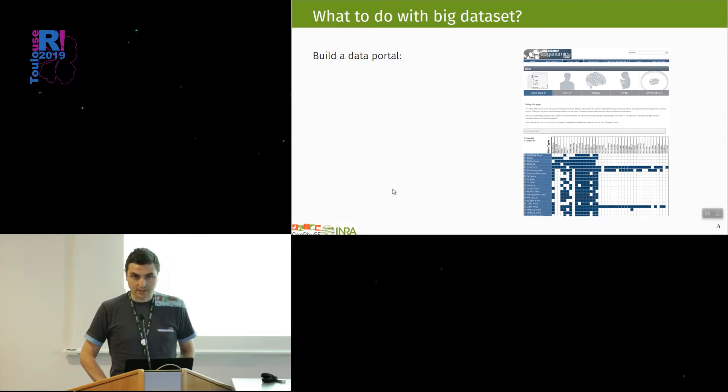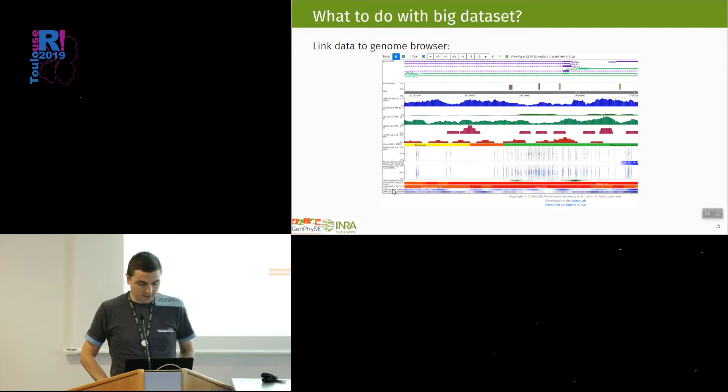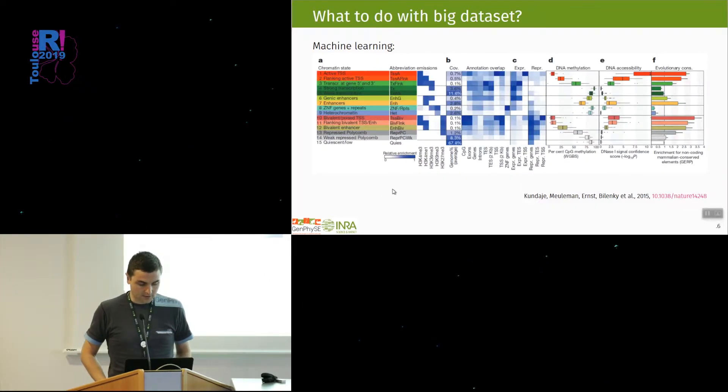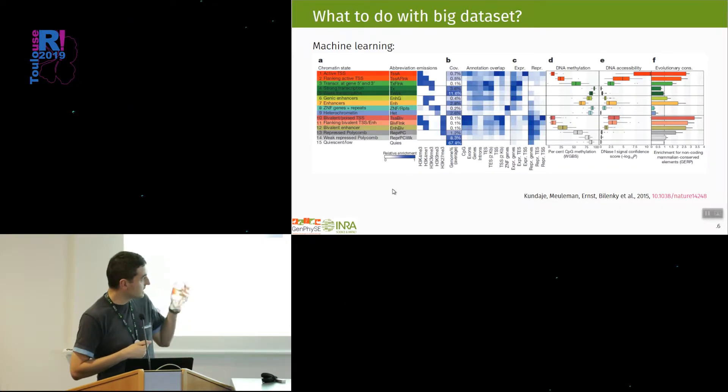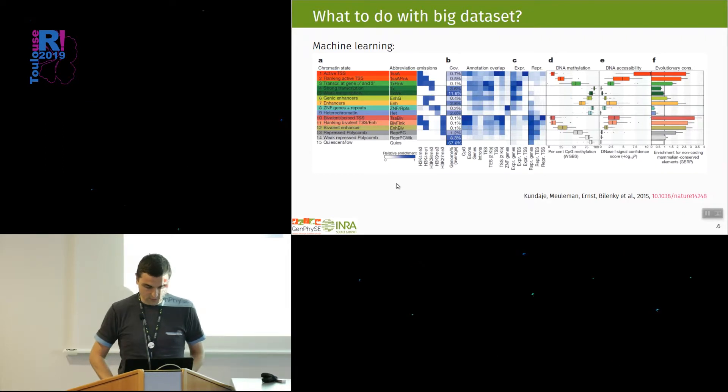They have built a very nice data portal that you can look at to see what are the available data they provide. They also link those data to very nice genome browsers, so you can in a few clicks look at your favorite genes or regions and see what are their epigenetic status in different cell types. They and others have also done many advanced statistics on those datasets, for example automatic classification of chromatin in different states.